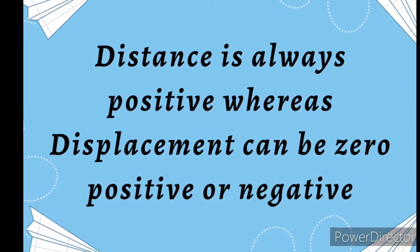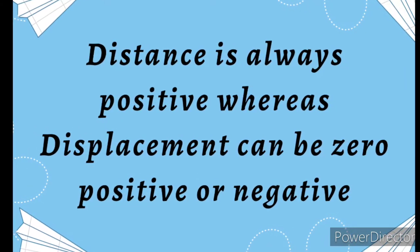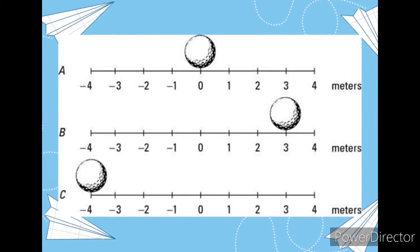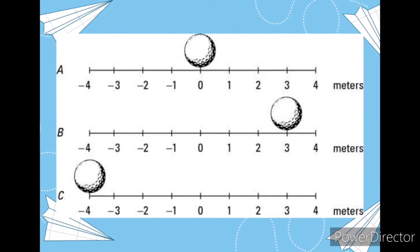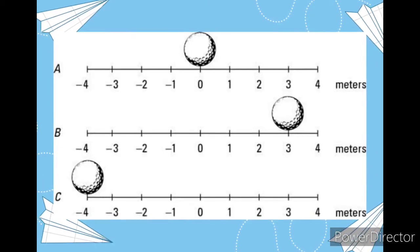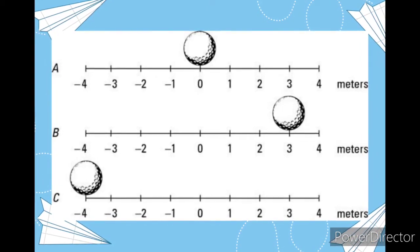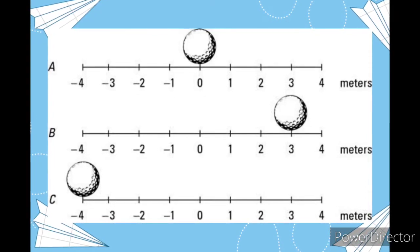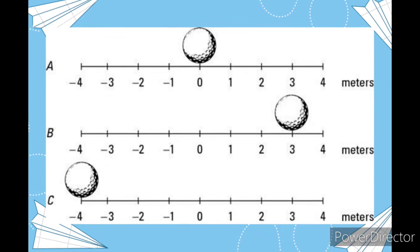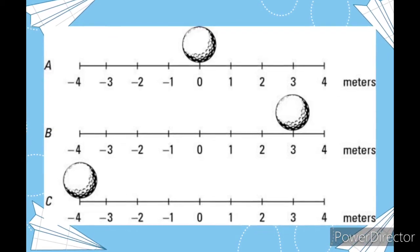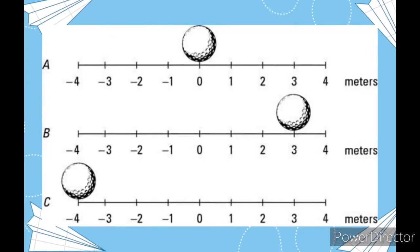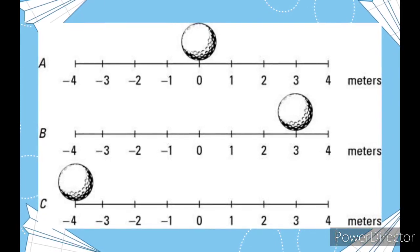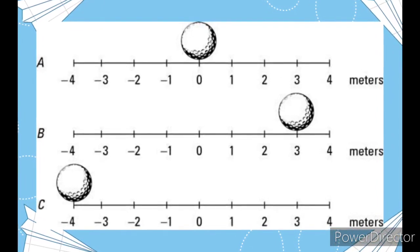You should know that distance is always positive, whereas displacement can be zero, positive, or negative. Suppose a ball is placed at origin O. After some time it travels three meters. At this point, distance is three meters and displacement is also three meters — here distance is equal to displacement.